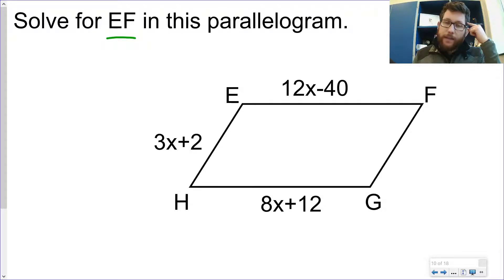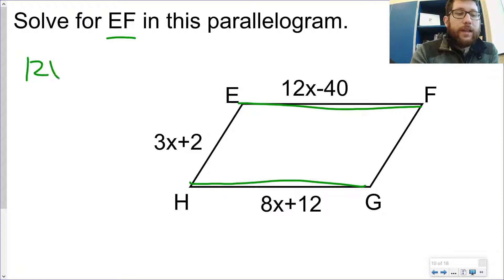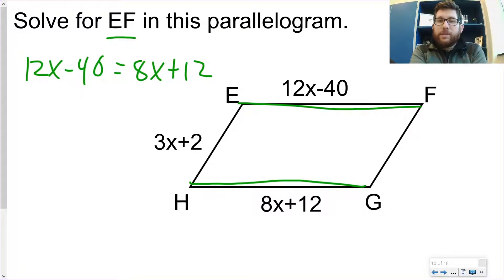What do I know about sides? I know sides are parallel. I know opposite sides are congruent. So I've got a set of opposite sides here, EF and HG. I'm going to set them congruent: 12x minus 40 is equal to 8x plus 12. Now, some of you might be saying, well, what about the 3x plus 2? We're actually not going to do anything with it. Sometimes problems like to add extra information just to distract you.